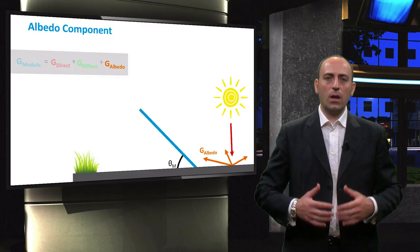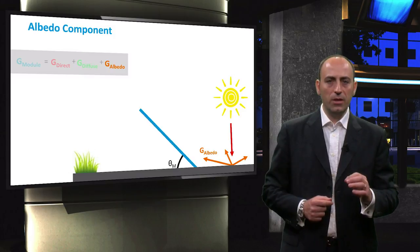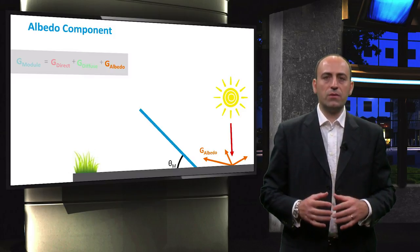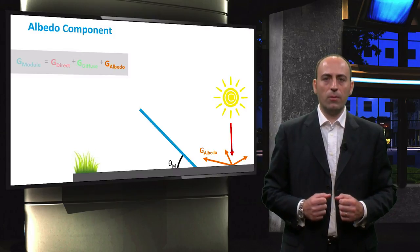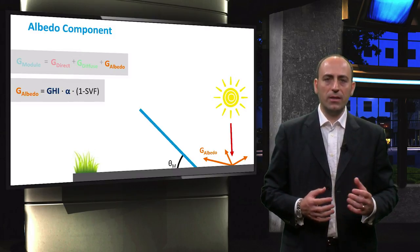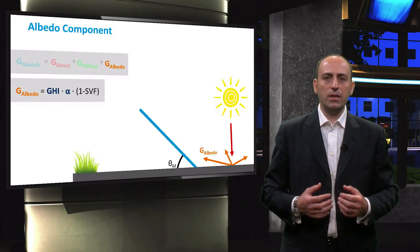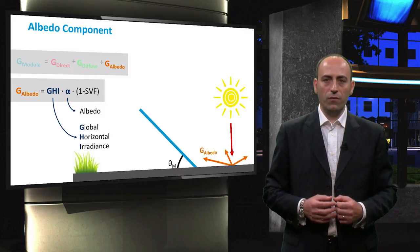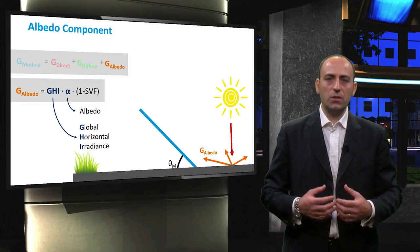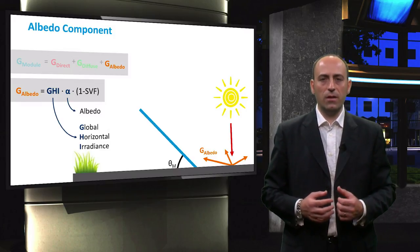And now we see the last component of the irradiance, the albedo. The module receives radiation that is reflected from the ground and the surrounding environment which can be approximated by this equation. GHI, as we have already seen, is the global horizontal irradiance and alpha is the albedo coefficient which expresses the reflection from the ground and the environment.